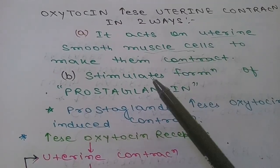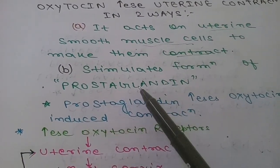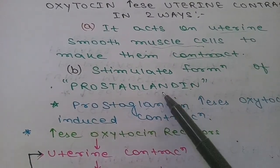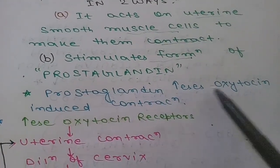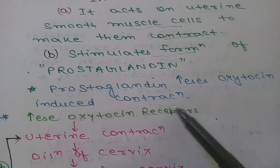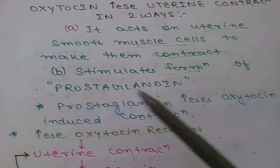The second way is that it stimulates formation of prostaglandin. Prostaglandin formation is also stimulated by estrogen, and prostaglandin increases oxytocin-induced contraction. These are the two ways through which oxytocin increases uterine contraction.